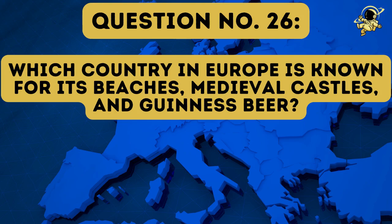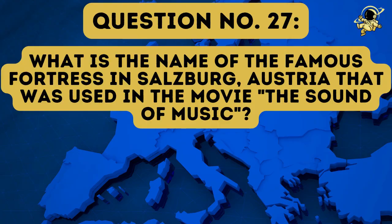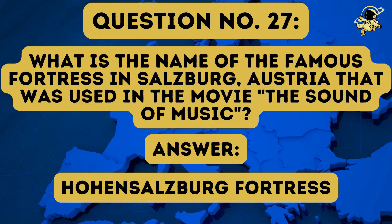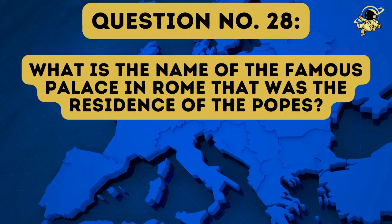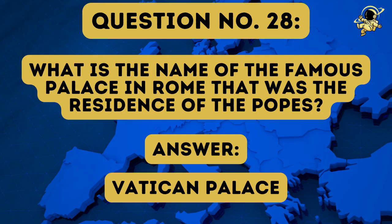Question number twenty-six: Which country in Europe is known for its beaches, medieval castles and Guinness beer? The answer to question number twenty-six is Ireland. What is the name of the famous fortress in Salzburg in Austria that was used in the movie The Sound of Music? The answer to question number twenty-seven is Hohensalzburg Fortress. Question number twenty-eight: What is the name of the famous palace in Rome that was the residence of the popes? And the answer to question number twenty-eight is the Vatican Palace.